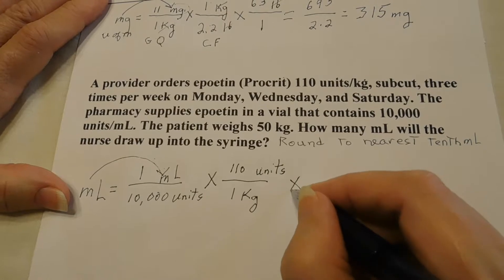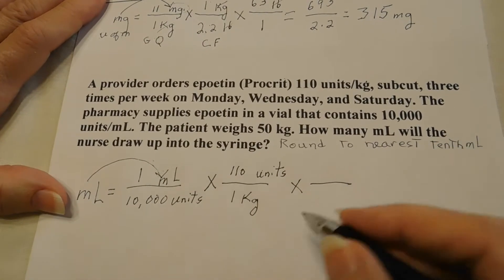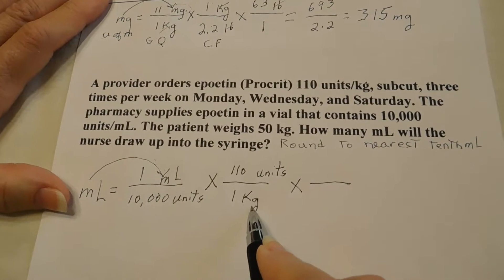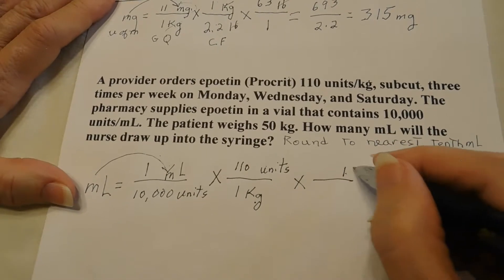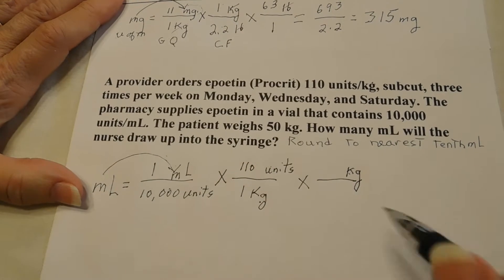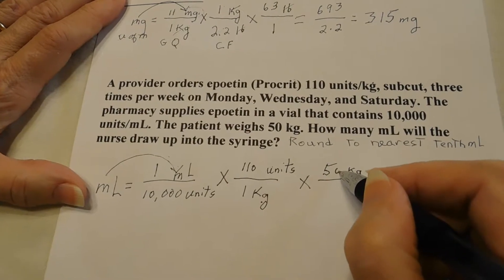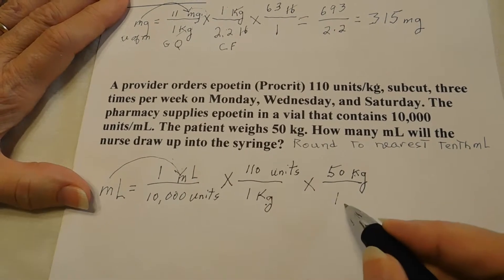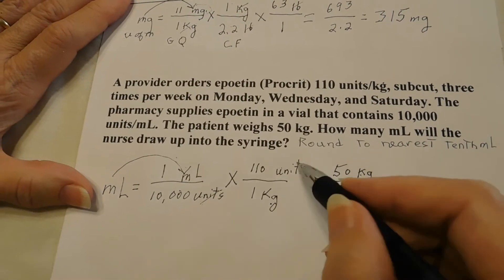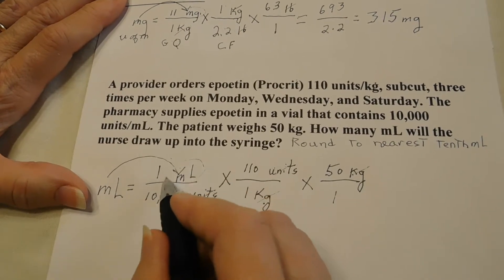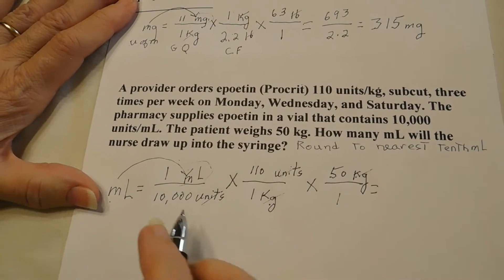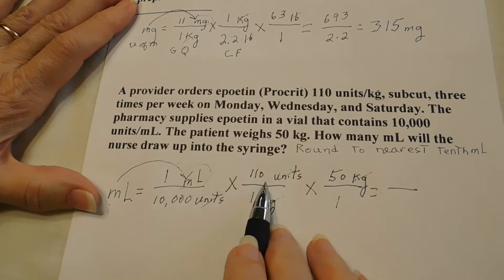We draw an X and a line for a new numerator and denominator. Since kilogram is in the denominator, we climb the hill and put kilogram in the numerator. What do we have that's kilograms? The patient weighs 50 kilograms, so we write 50 with 1 as our placeholder. Are we ready to solve? Units cross out here, kilograms cross out here, and the only thing left is milliliters — our unit of measure.